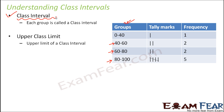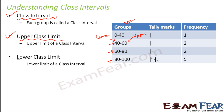Every class interval will have a lower limit and an upper limit. When you look at 40 to 60, 40 is the lower limit and 60 is the upper limit. The upper limit of the class interval is called the upper class limit, and the lower limit is called the lower class limit. Note that 60 is the upper class limit for one interval but the lower class limit for the next interval.